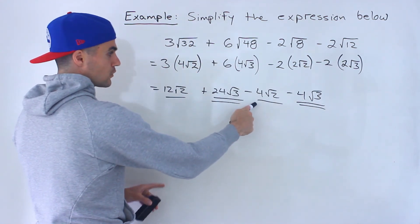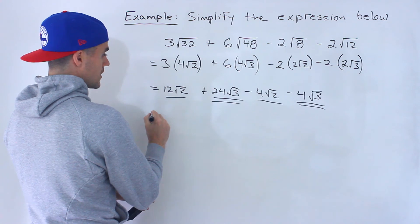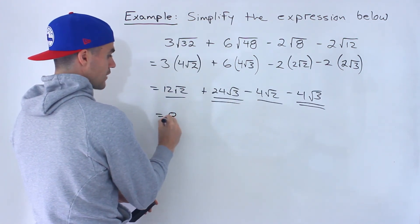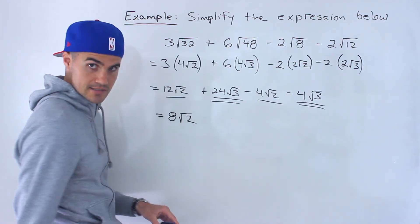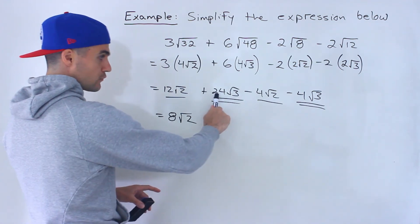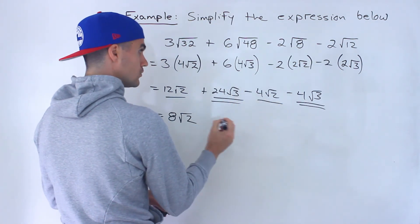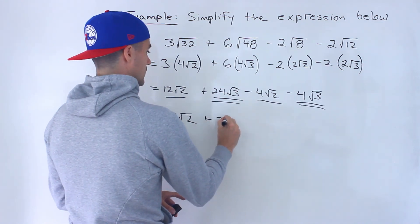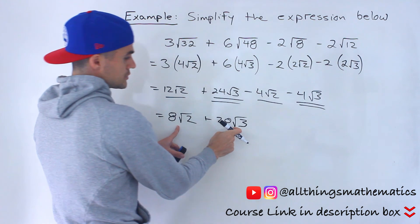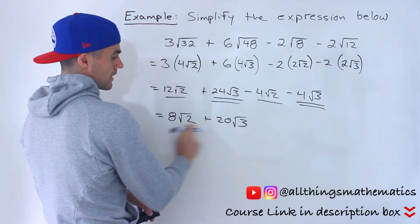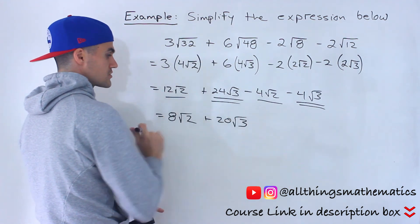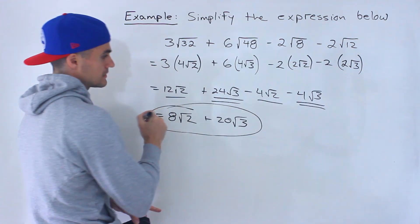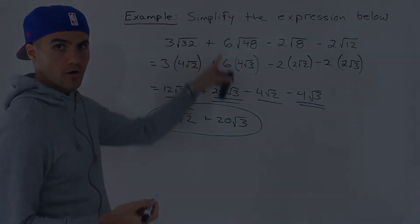So to net them out, 12 root 2 minus 4 root 2, you just work with the coefficients in front. 12 minus 4 is 8, so we'd have 8 root 2. 24 root 3 minus 4 root 3 gives us 20 root 3. And these two aren't like terms because the radicals are different, so we can't further simplify this. So this ends up being the simplified expression.